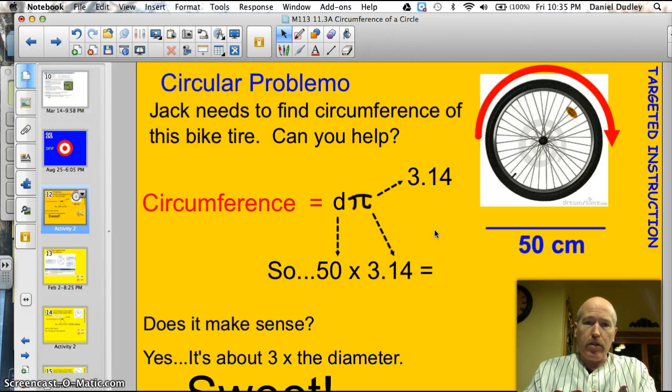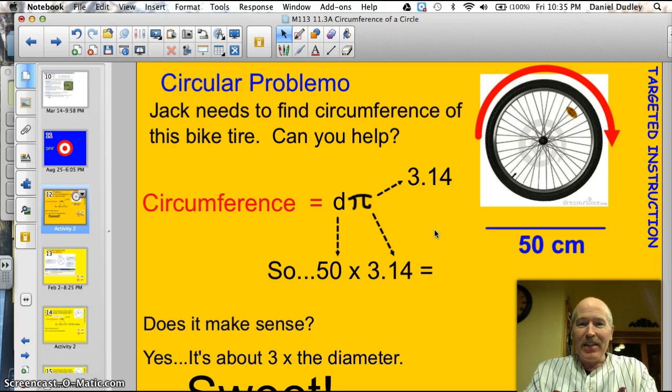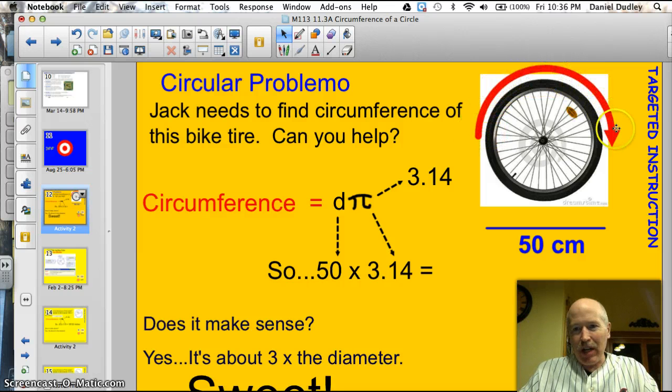All right, here's the circular problemo. Jack needs to find the circumference of his bike tire. Can you help? Well, let's take a look here. Here's his bike tire. And the circumference is the distance around the outside of the tire, all the way back to here. It's kind of like going all the way around the clock, all the way around.